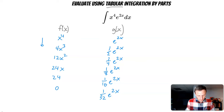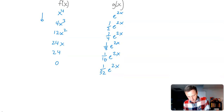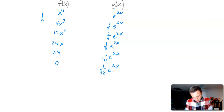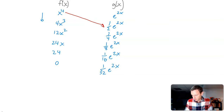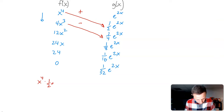So here are all our derivatives and all our integrals. Now the way tabular integration works is: you take the first f(x) term and multiply it by the second g(x) term, then work your way down. As you do that, you alternate signs starting with positive. So the first term is going to be x to the 4th times 1/2 e to the 2x.